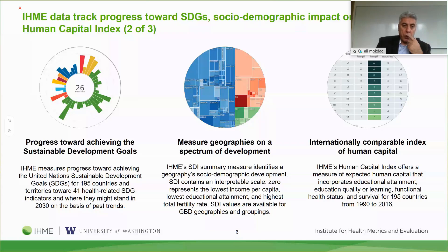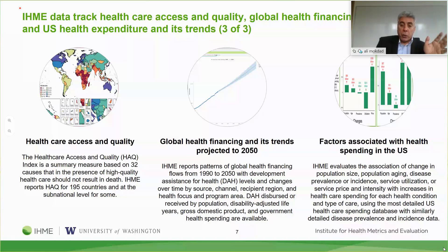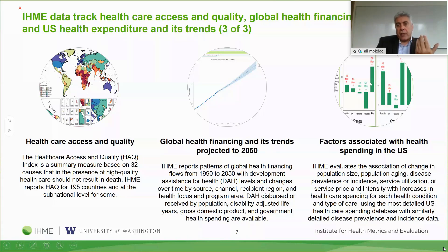We have an indicator called health access and quality of care which we do for every country in the world. We track global health financing and its projection to 2050—what countries are spending out-of-pocket, on insurance, inpatient, and outpatient, and what is driving the increase in costs. For the United States, we publish on factors associated with health spending: expenditure on drugs is increasing, utilization for inpatients is coming down, and outpatient is increasing. All these products are available on our website with detailed publications in The Lancet or JAMA.